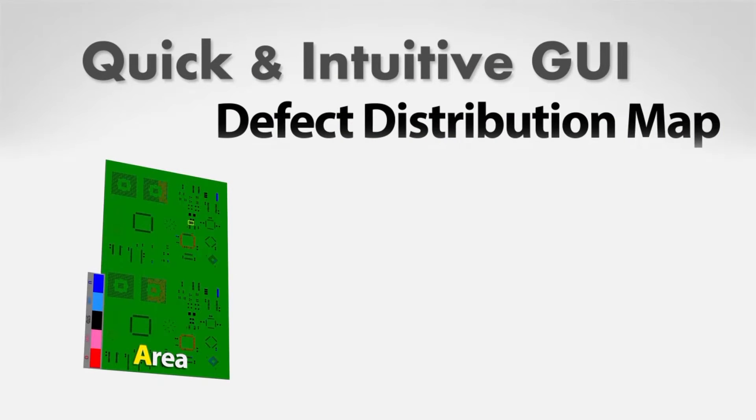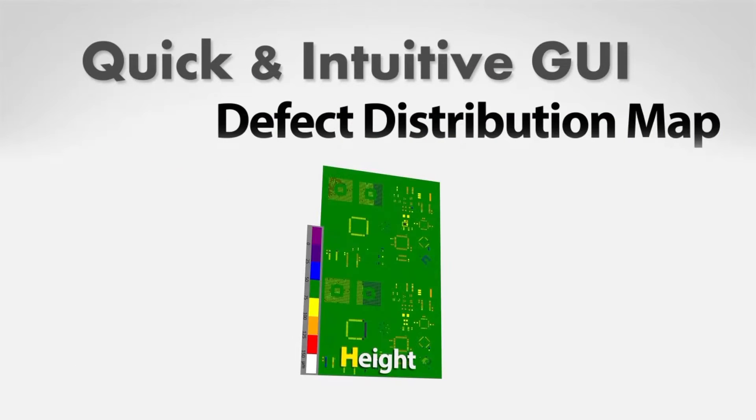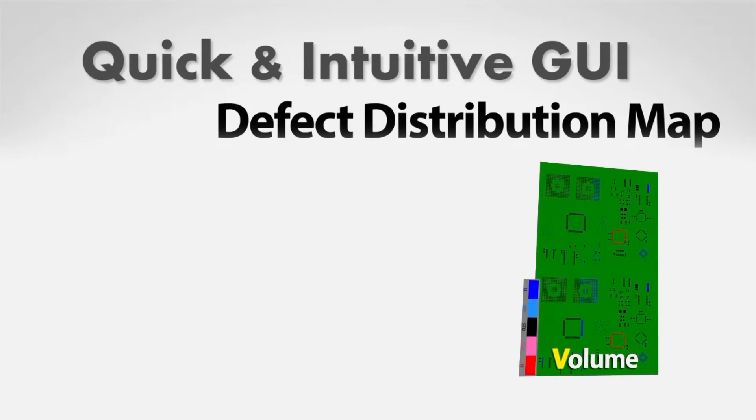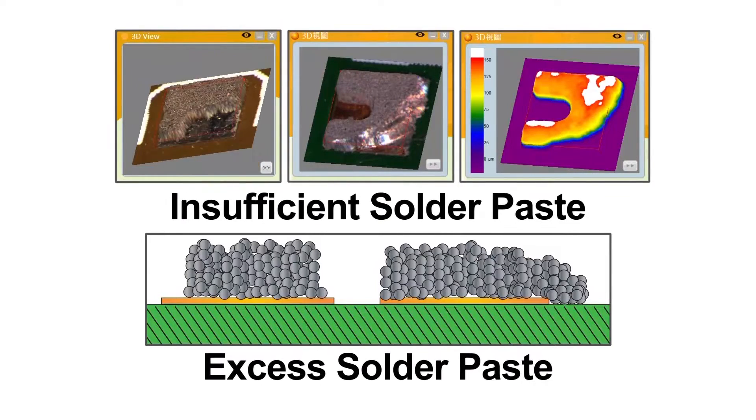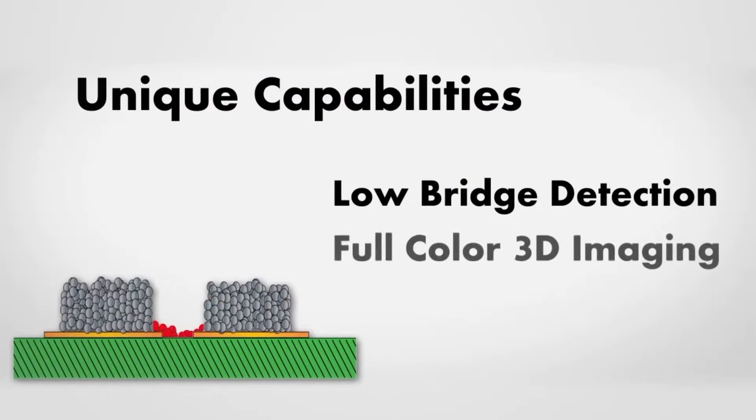SPI quickly inspects the area, height and volume of every solder joint, as well as XY shift, insufficient or excess solder paste and short in solder paste.